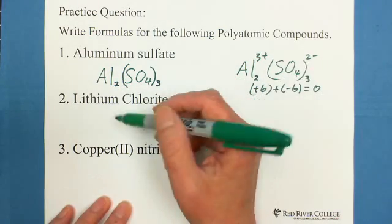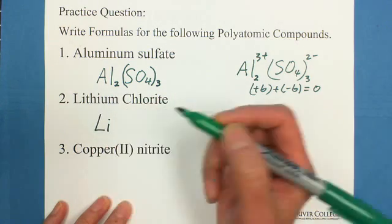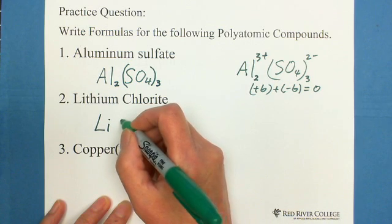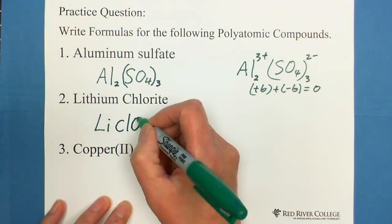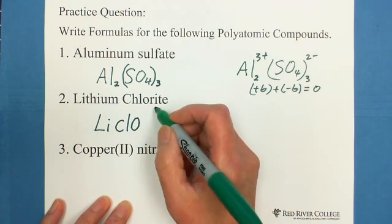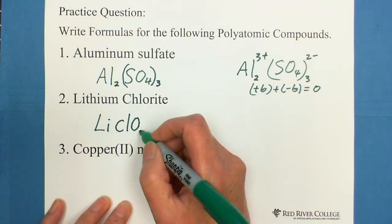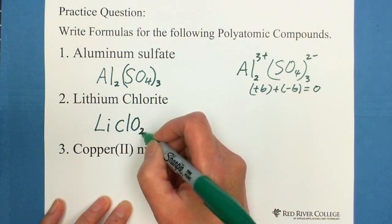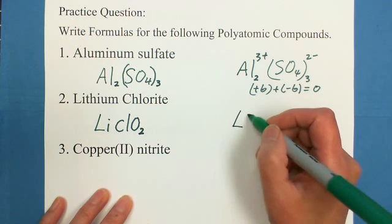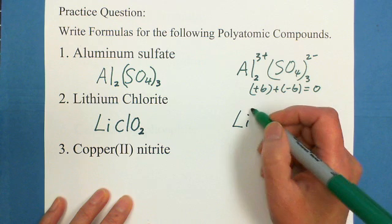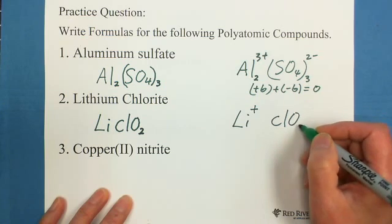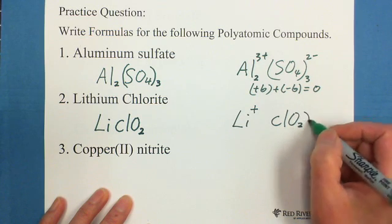Next is lithium chlorite. Lithium is Li. Chlorite is ClO2, because we know ClO3 is chlorate, and ITE is 1 less, so it's ClO2. Now we need to figure out lithium is fixed charge with positive 1 in the first column, and the ClO2 is chlorite with negative 1 charge.